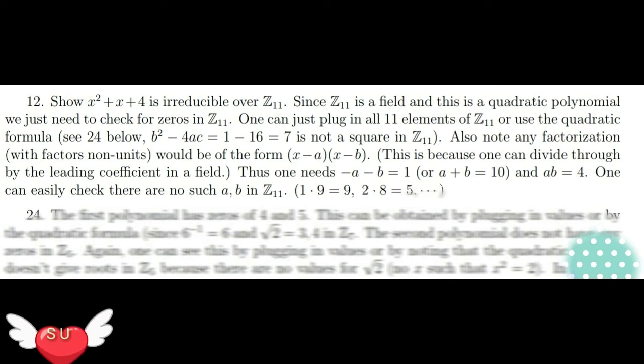One can easily check there is no such a, b in Z₁₁, which is 1 to 10. So, 1·9 equals 9, 2·8 equals 5. So, that is what we do.